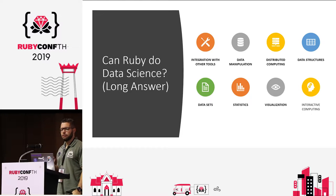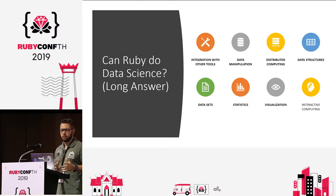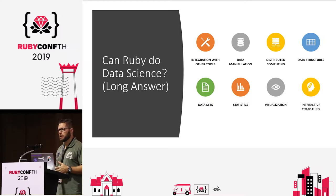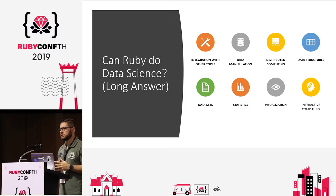In Ruby, we have libraries to integrate with other tools like R and Python. We have data manipulation libraries, gems for distributed computing, gems for data structures like Daru. We'll see samples for every one of these groups later. We have some ready-made datasets like the Iris dataset, statistics libraries, and data visualization libraries for interactive computing.